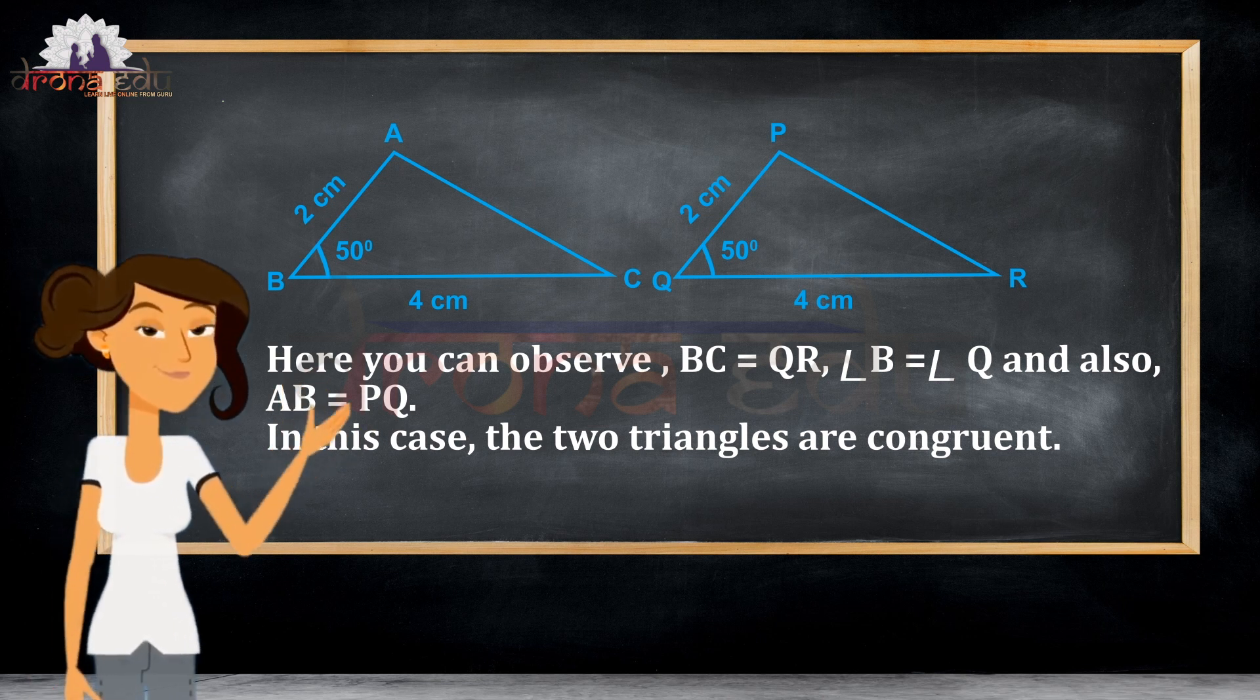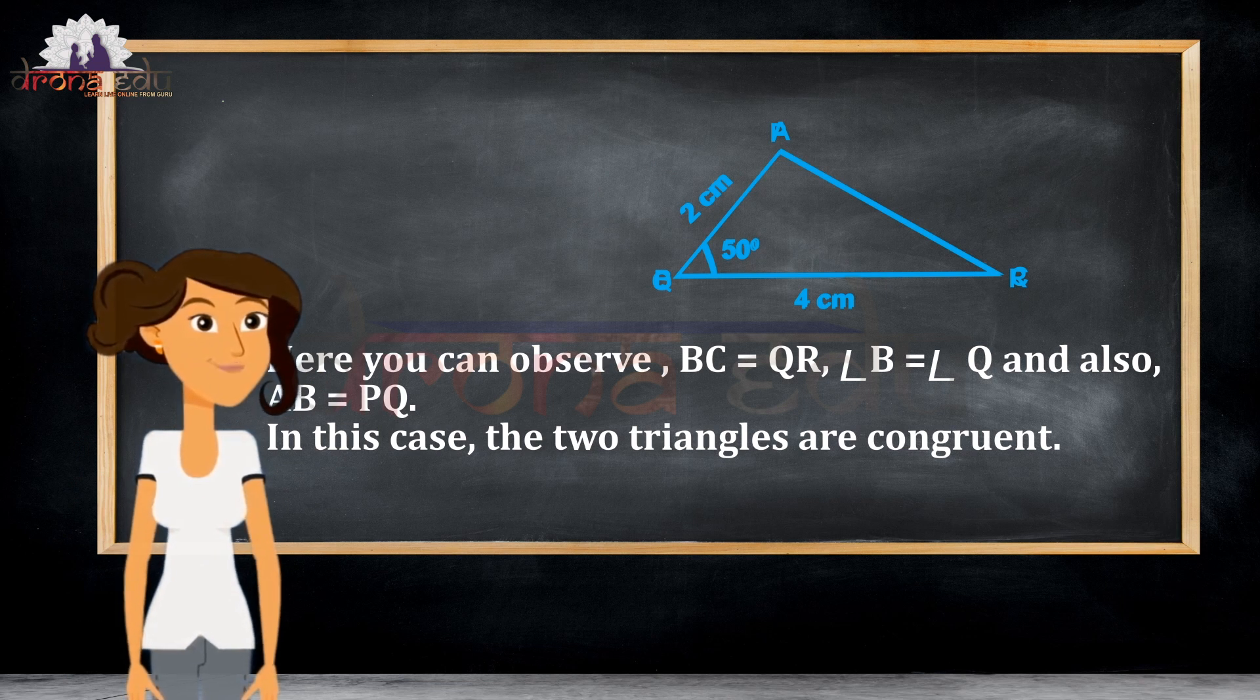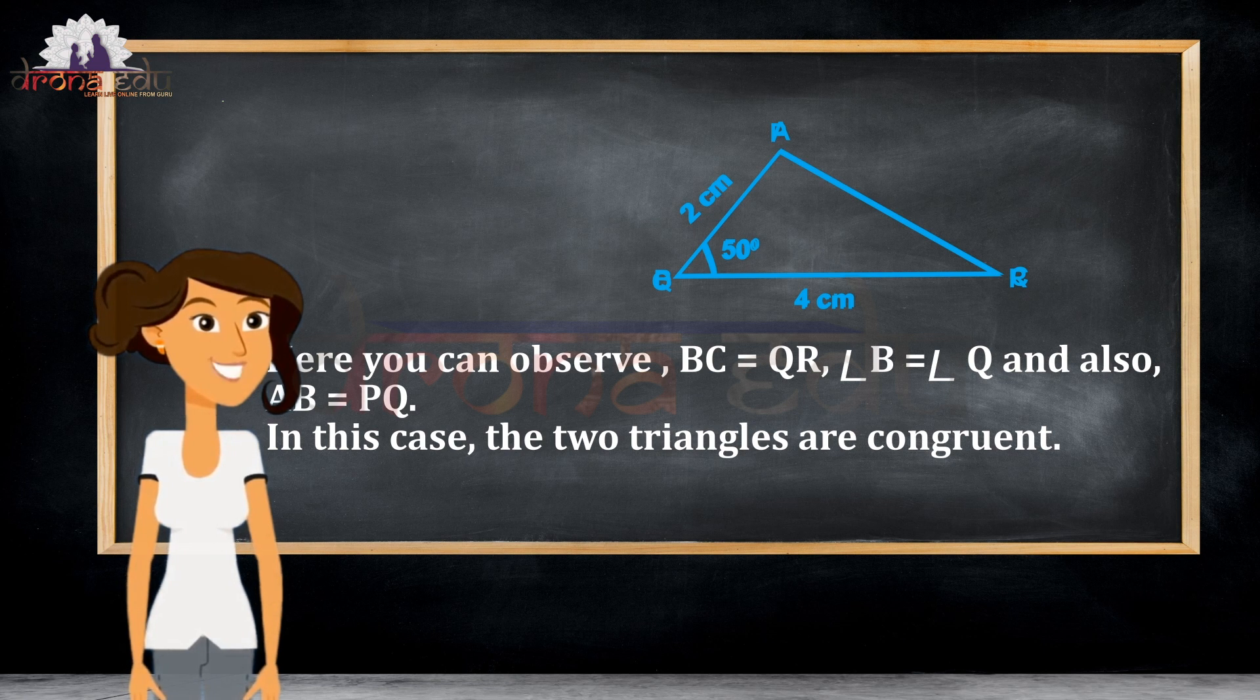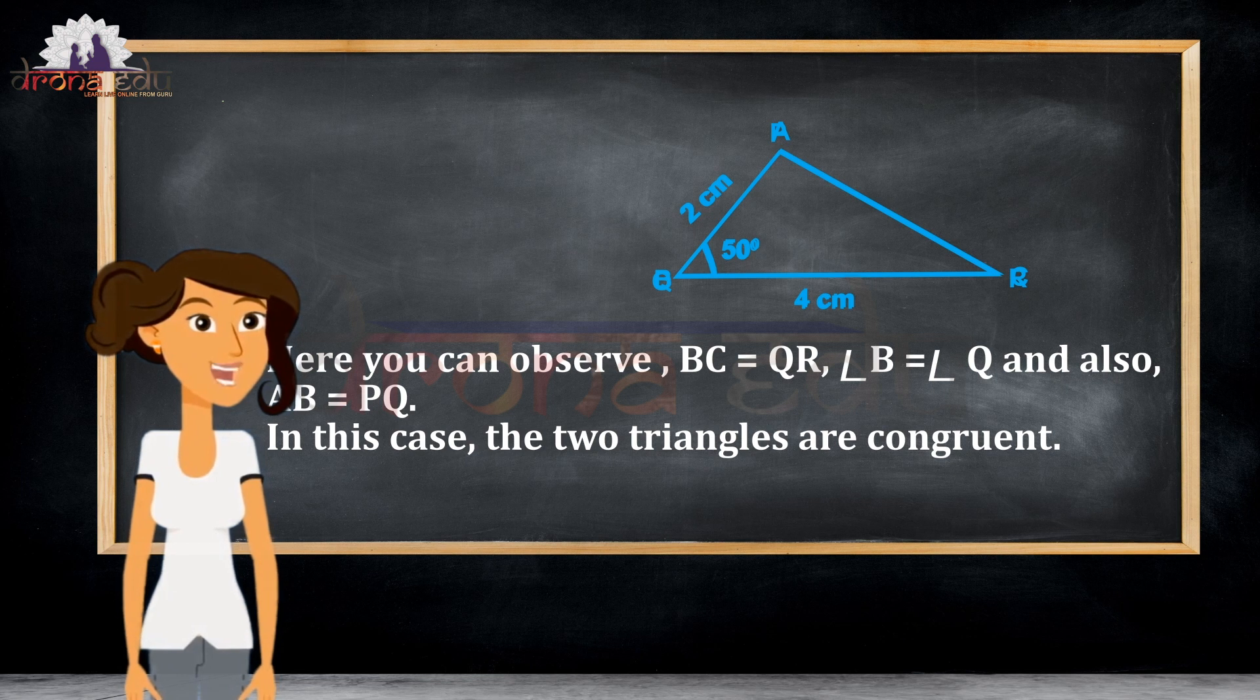If you observe, when I place one triangle above the other, they will completely cover because they both are the same shape and same size. So, in this case, the two triangles are congruent.